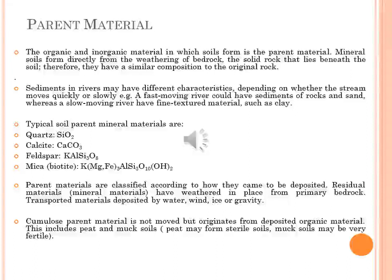Parent materials are classified according to how they came to be deposited. Residual materials are mineral materials that have weathered in place from primary bedrock. Transported materials are those deposited by water, wind, ice, and gravity. Humulose parent material is not moved but originates from deposited organic material, including peat and muck soil, resulting from preservation of plant residues by low oxygen content of a high water table. While peat may form sterilized soil, muck soil may be very fertile.